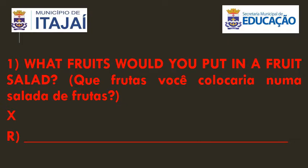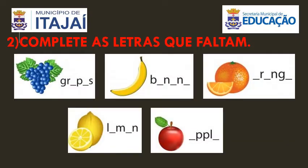Continuando, depois que terminar esse exercício, pula uma linha e escreve o número 2. Complete as letras que faltam. Teacher, tem que fazer o desenho? Não precisa, se você não quiser. Então, você tem ali 5 palavras, 5 frutas diferentes. Você está vendo o desenho da fruta, então fica fácil de copiar o nome dela, não é verdade? E aí você vai completar — vai ter que copiar a palavra inteira, mas vai ter que completar as letrinhas que faltam. Combinado?